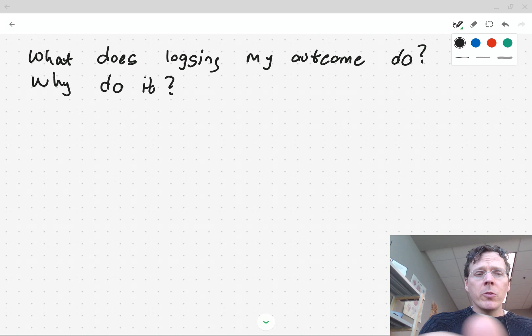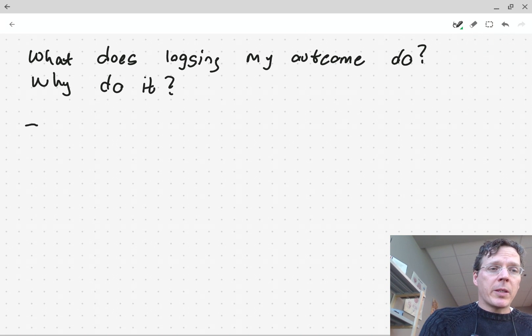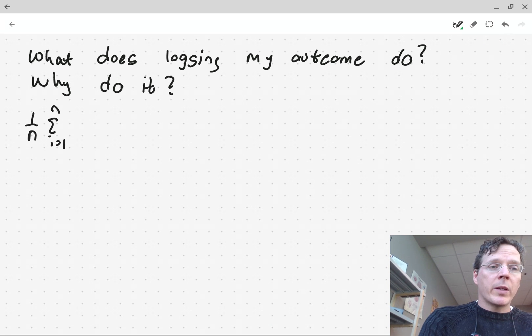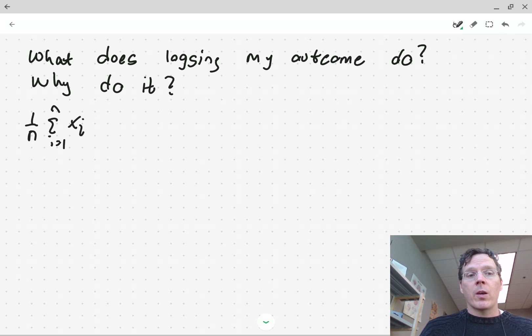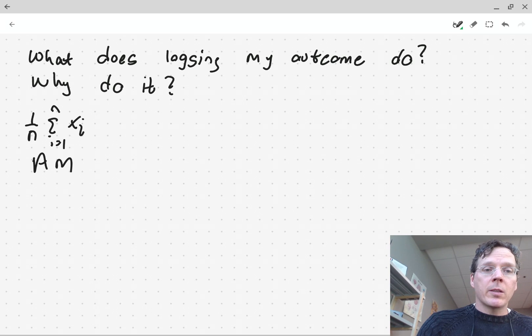So to do this, let me first talk about the arithmetic mean. The arithmetic mean is just the sum, i equals one to n, of the individual observations xi. So that's the arithmetic mean.